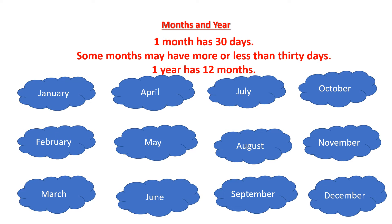One year has 12 months. So let's revise the months' names: January is the first month of the year, February the second, March the third, April the fourth, May the fifth, June the sixth, July the seventh, August the eighth, September the ninth, October the tenth, November the eleventh, and December is the last — the twelfth month of the year.